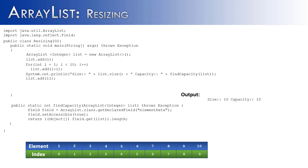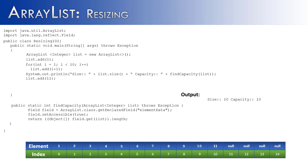What would happen if we tried to add one more element to this ArrayList? Would it blow up or cause an error? No — what it does behind the scenes is add more capacity. It adds five more slots, increasing the capacity by 5, and then inserts the 11 into the 10th index. So the size would be 11, but the capacity would be 15.